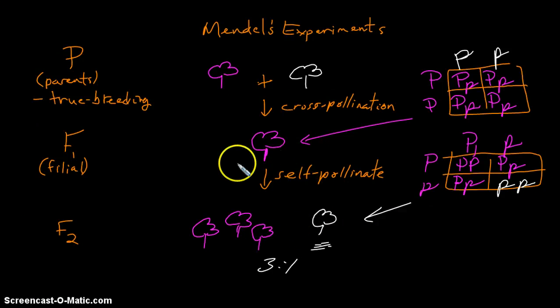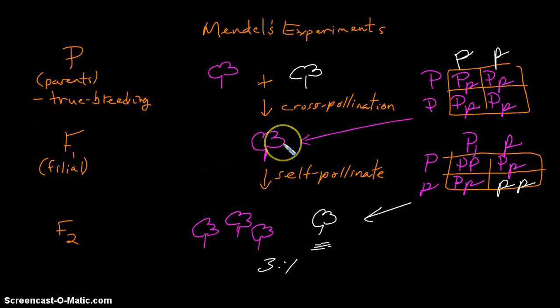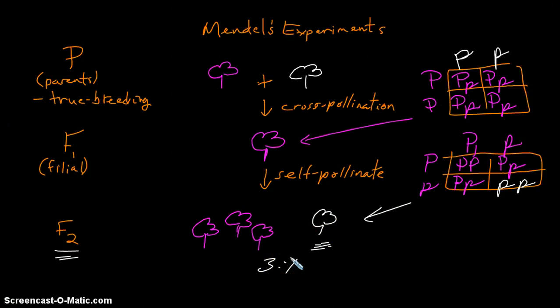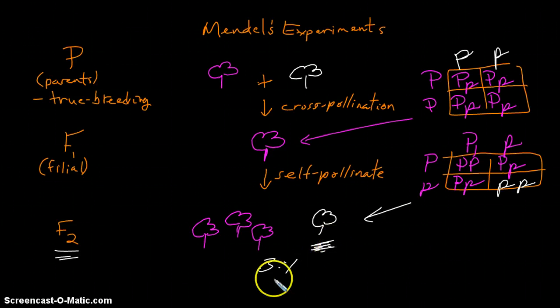He had this occur not just with flower color, but with a total of, I believe, seven different characters that he was tracking. He had these same numbers recurring in the F2 generation, or the same sequence of events where one trait would disappear and then reappear in the third generation in about the same proportion as what he saw in this experiment. So he knew something was up, and mathematically he was able to explain what was going on, and that's what we're going to be looking at in future discussions.